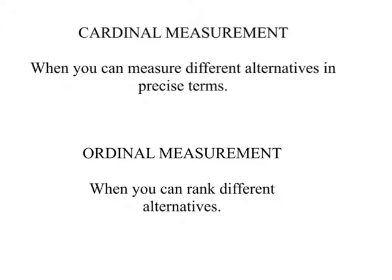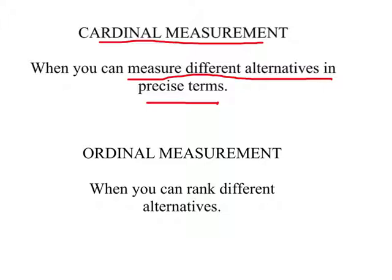Initially, philosophers and economists grappled with the idea: can we measure utility or satisfaction derived from consumption of a good precisely, like distance? There are two ways we can measure things. One is cardinal measurement — measuring in precise terms. For example, the distance between the US and Mexico is about a thousand miles, while the US and Brazil is several thousand miles. Similarly, temperature can be measured in precise terms.